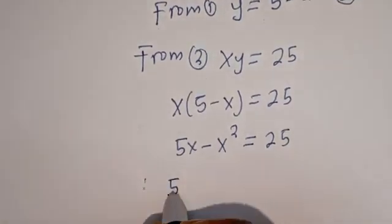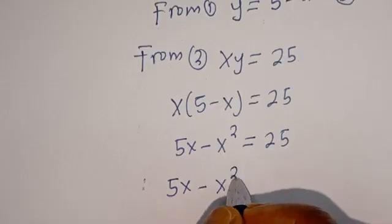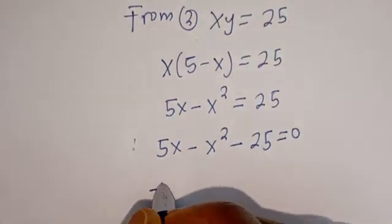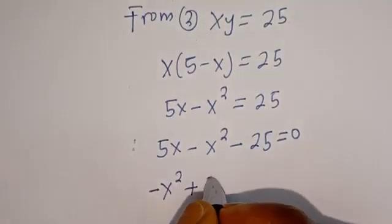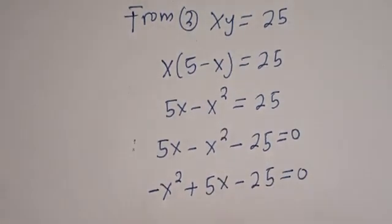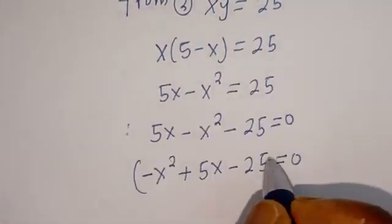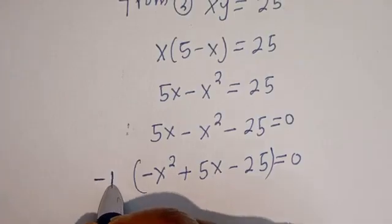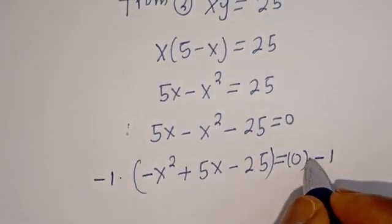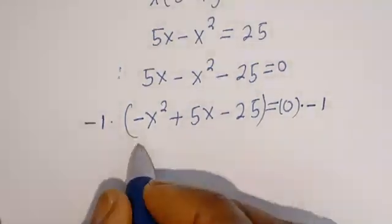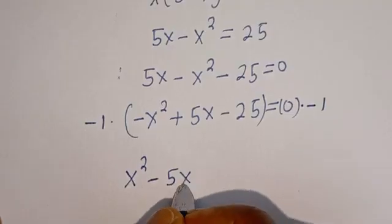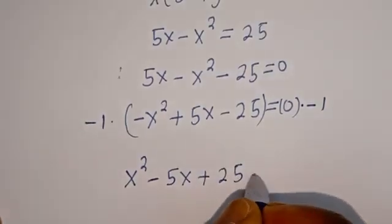Then we have 5x minus x squared minus 25 is equal to 0. Rearranging, we have minus x squared plus 5x minus 25 is equal to 0. Multiplying all terms by minus 1, this becomes x squared minus 5x plus 25 is equal to 0.